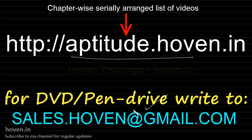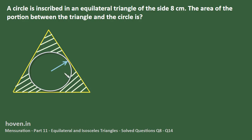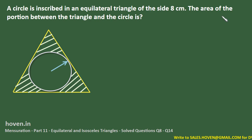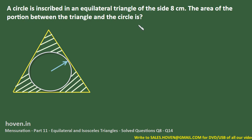Thank you for your support. A circle is inscribed in an equilateral triangle of side 8 cm. The area of the portion between the triangle and the circle is to be found out.